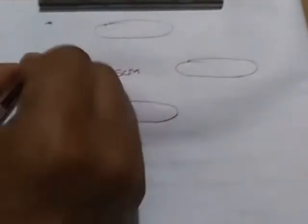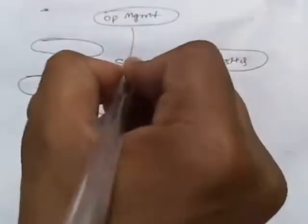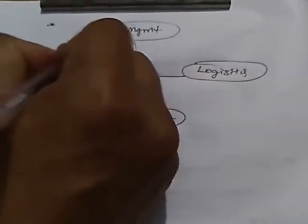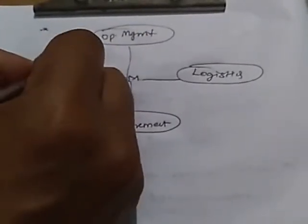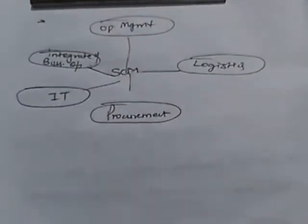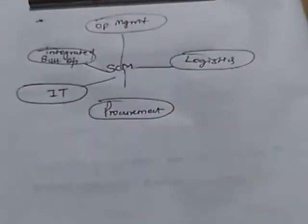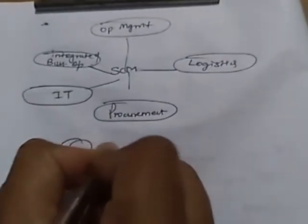SCM consists of five things: number one is operation management, number two is logistics, number three is procurement, number four is information technology, and number five is integrated business operations. These are the five things that SCM consists of to design, plan, control, and monitor supply chain activities. Now we will discuss the objectives of SCM.